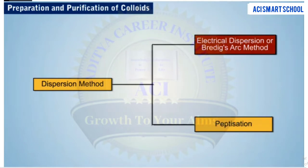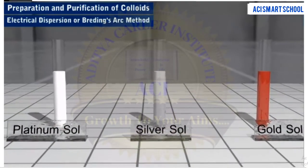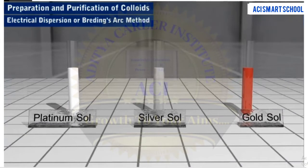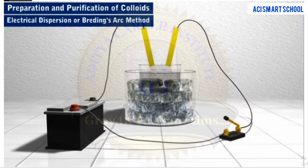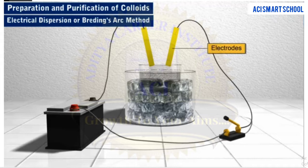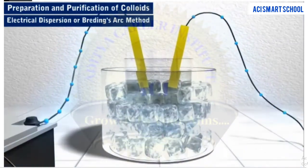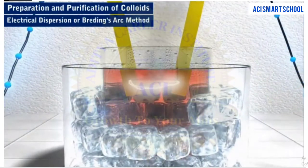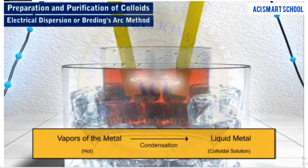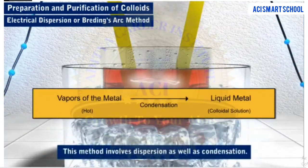Let us discuss electrical dispersion or Bredig's arc method first. This method is commonly used to prepare colloidal solutions of metals such as platinum, silver, and gold. In this method, two electrodes of the metal whose colloidal solution is to be prepared are immersed in the dispersion medium, and an electric arc is struck between the electrodes. The intense heat of the arc vaporizes the metal, which gets condensed immediately in the liquid to form a colloidal solution. This method thus involves dispersion as well as condensation.